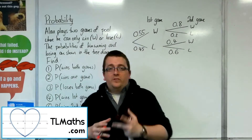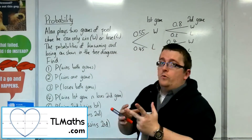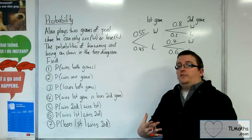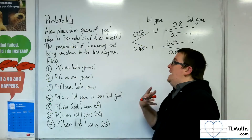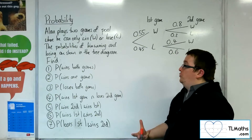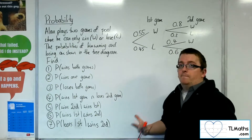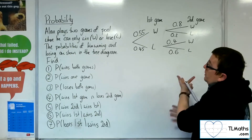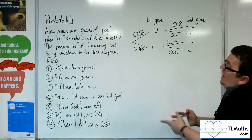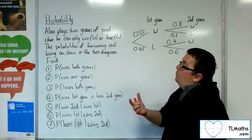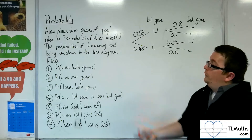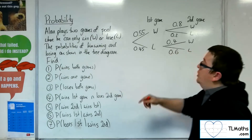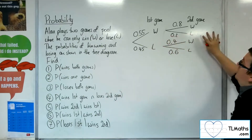So in this video, what I want to do is go through a conditional probability set of problems that use a probability tree diagram. We've got Alan, who's going to play two games of pool, where he can only win or lose. The probabilities of winning and losing are shown in the tree diagram.